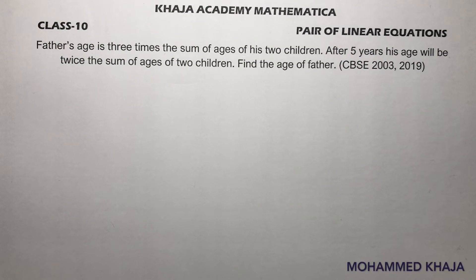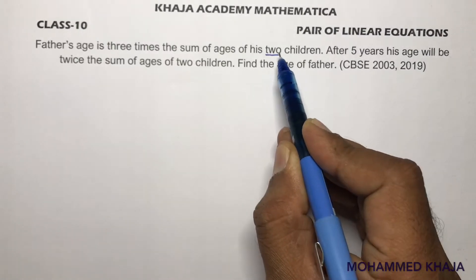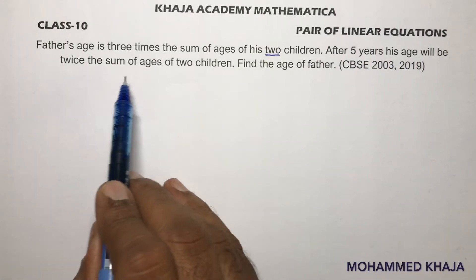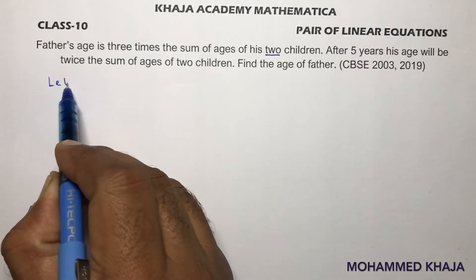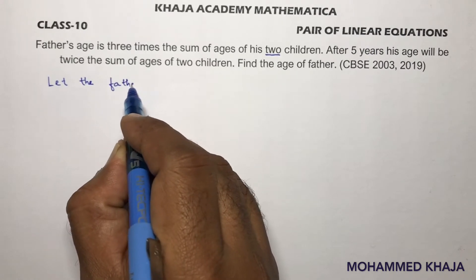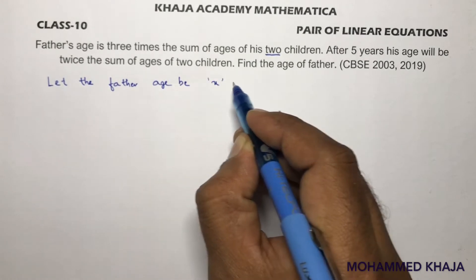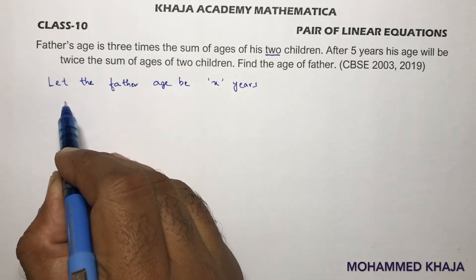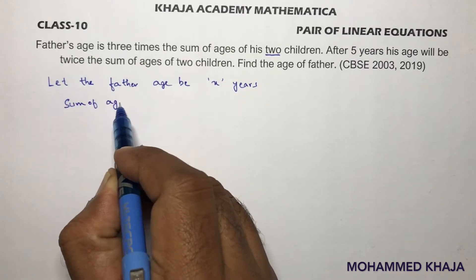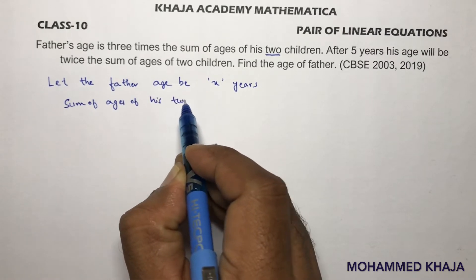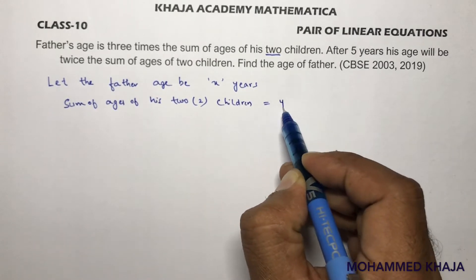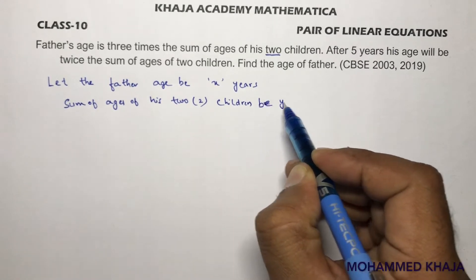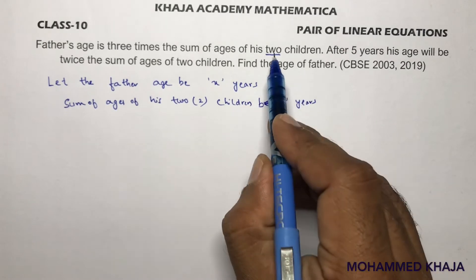Class 10 important question from pair of linear equations: a father's age is three times the sum of ages of his two children. After five years, his age will be twice the sum of the ages of his two children. Let the father's age be x years, and let the sum of the ages of his two children be y years. Note that y represents two children.